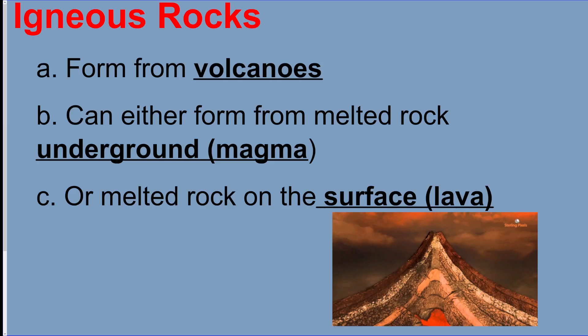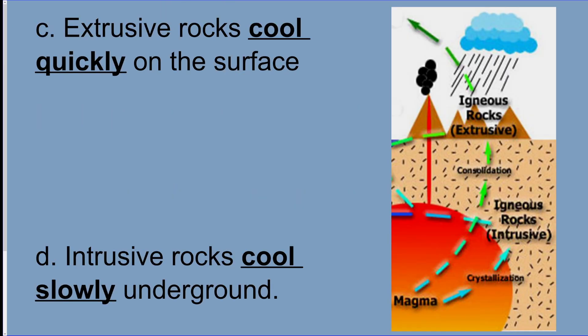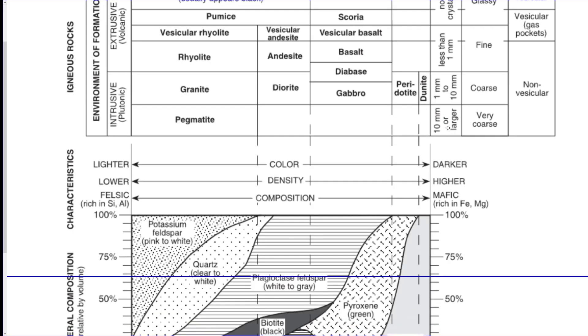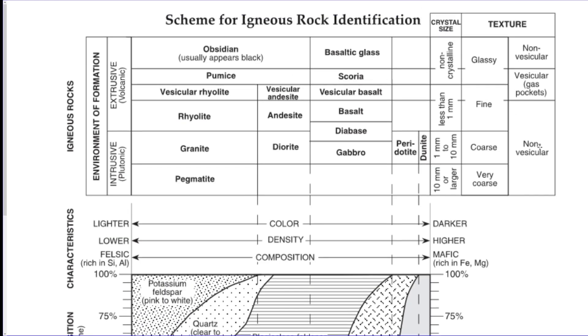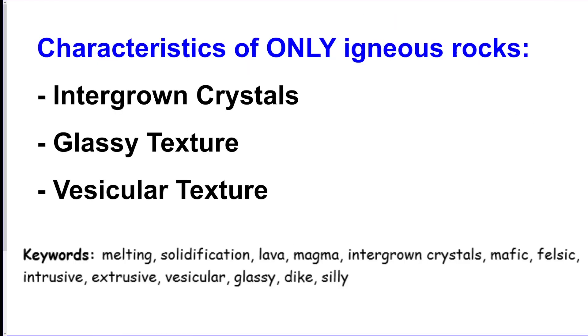Igneous rocks form from volcanoes — either above ground from lava or underground from magma. Extrusive rocks cool quickly on the surface, and intrusive rocks cool slowly underground. You need to know how to read the igneous rock chart. What's unique to igneous rocks: interlocking crystals, glassy texture, and vesicular texture.